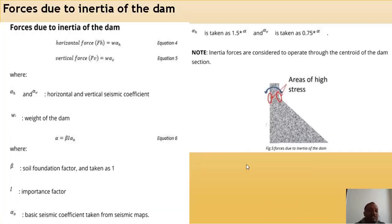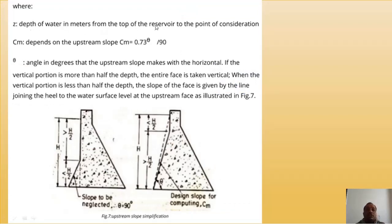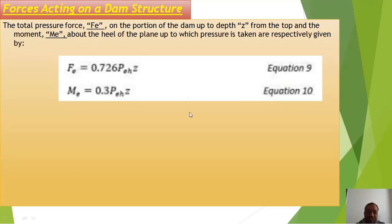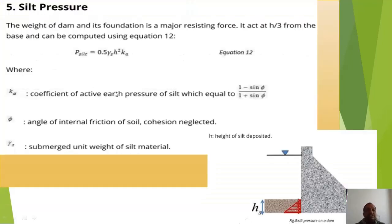Earthquake forces include hydrodynamic force due to the inertia of water. The horizontal earthquake pressure Peh equals gamma_w × alpha × H × Ch, where Ch is a coefficient depending on upstream slope, H is the depth of reservoir, and z is the depth of water from the top of the reservoir to the point of consideration. Self-weight of dam: W equals gamma_m times volume — first calculate the volume of the structure, then multiply by unit weight of dam material.